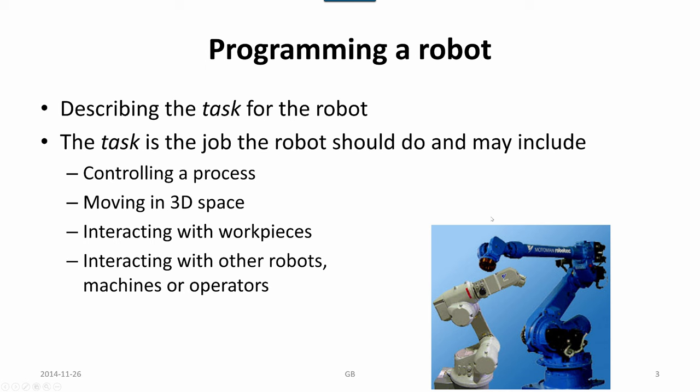Programming a robot involves describing the task for the robot. The task is the job the robot should do and may include controlling a process, moving the robot arm for different workpieces in 3D space, or devices. Interaction with workpieces means the robot and the end effector to the workpiece, but also different processing operations which could be welding, laser cutting, polishing, deburring, whatever actually.